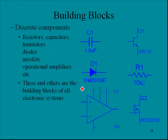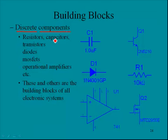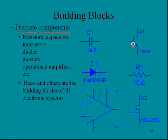First, let's look at initial building blocks, which we refer to as discrete components. Here we see schematic diagrams for resistors, capacitors, diodes, MOSFETs, operational amplifiers, and transistors. These and others are the building blocks of all electronic systems.